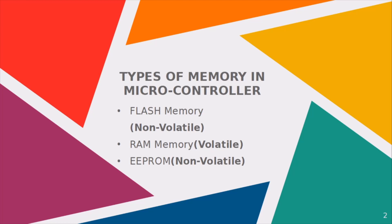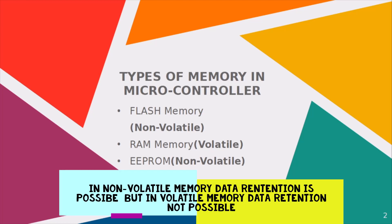First of all we have to understand what is actually meant by non-volatile and volatile types of memory. When it comes to non-volatile memory, it has the capability to retain the data even when the power goes off. But in the case of volatile memory, it doesn't have the capability for data retention — whatever data is present in the memory will get erased when the power goes off.